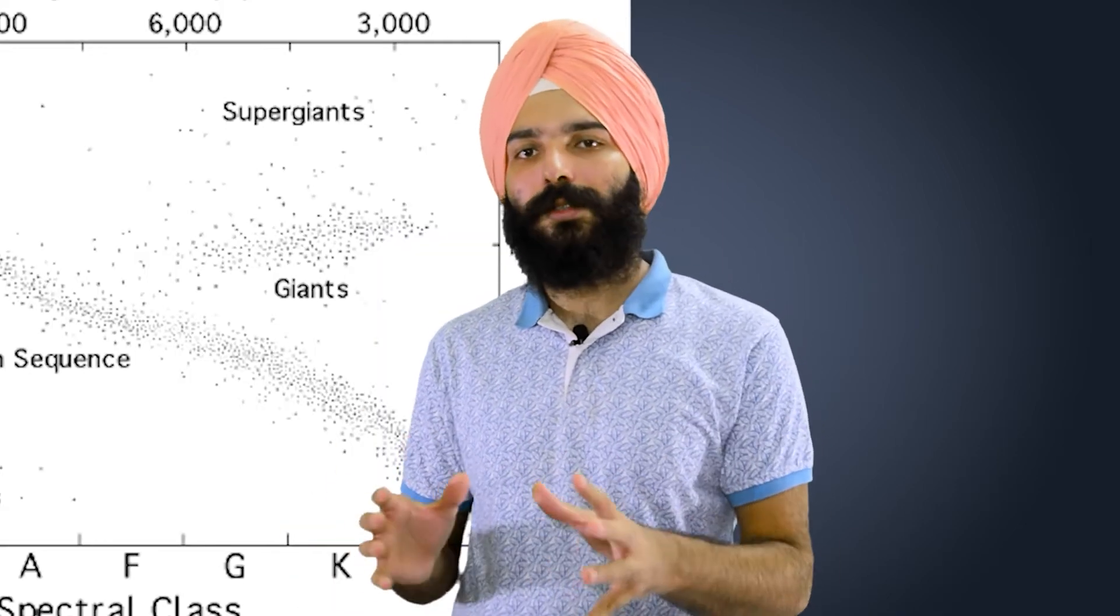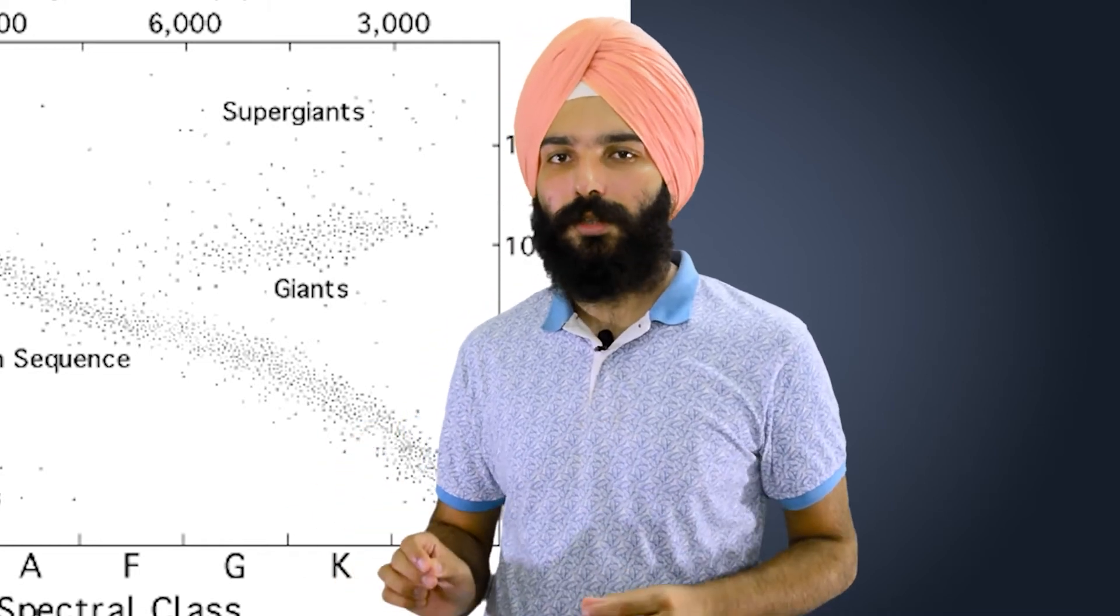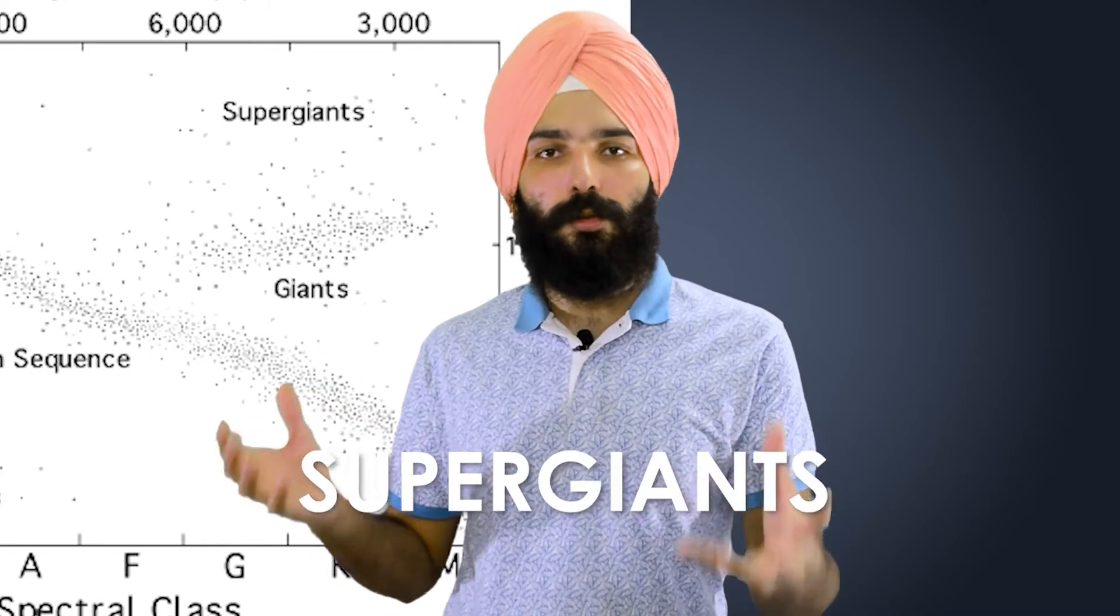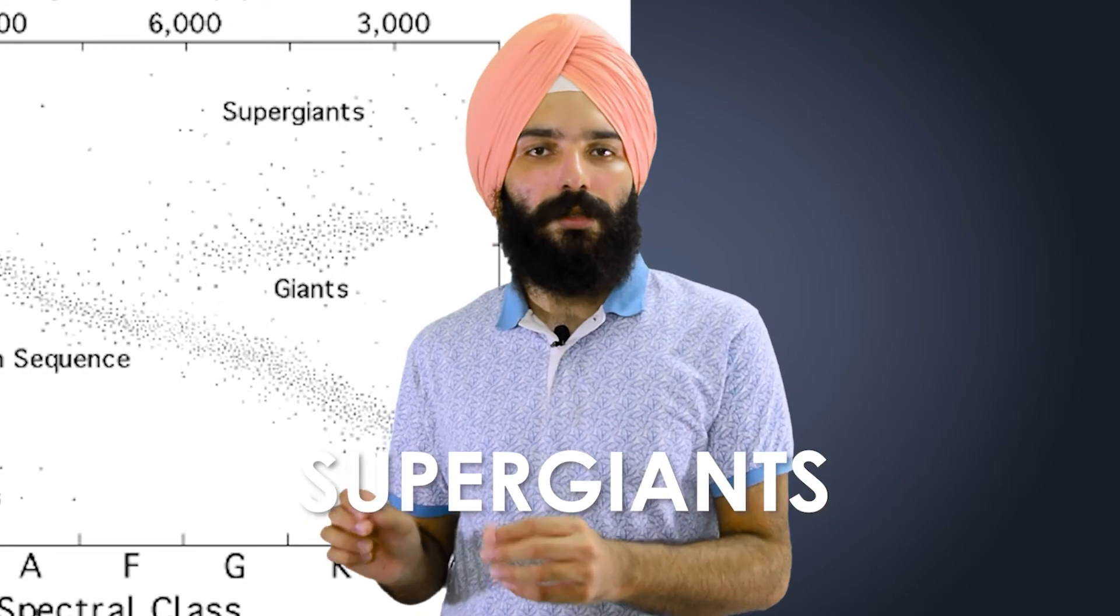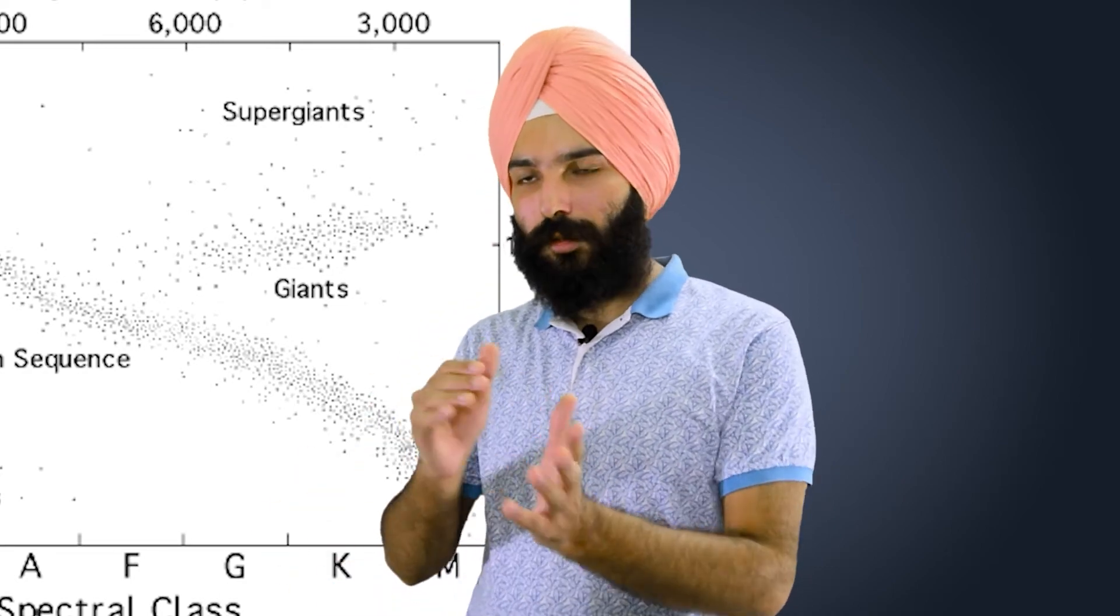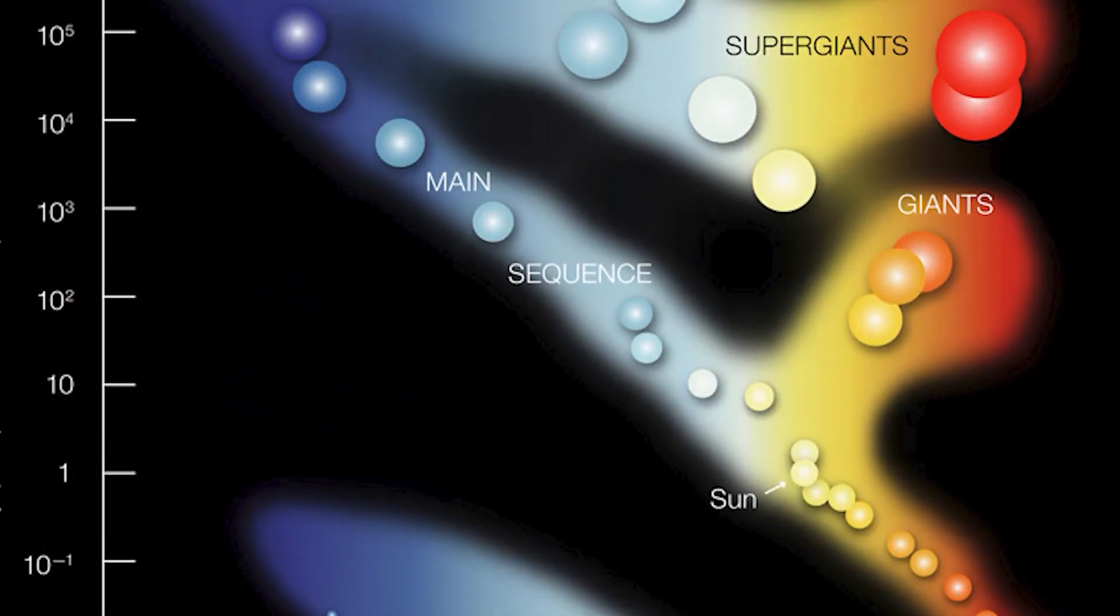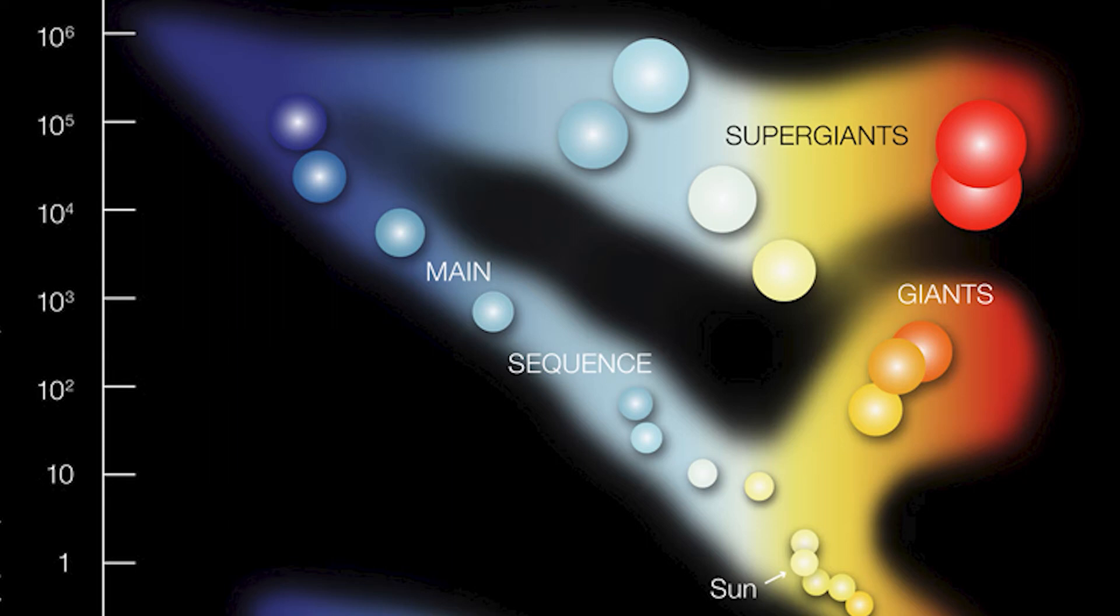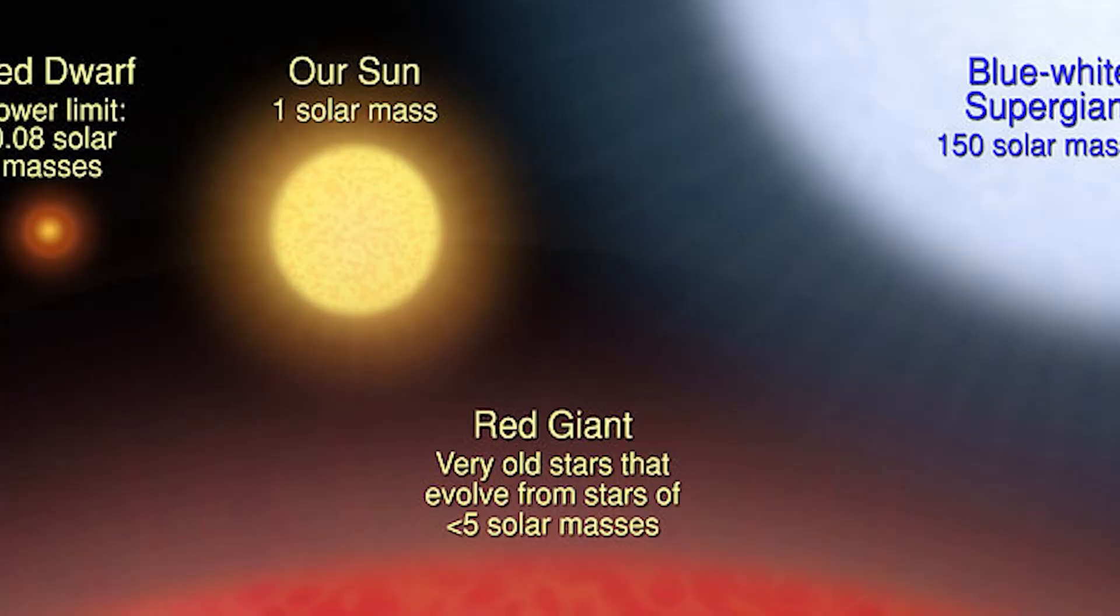Now on the opposite end of this diagram, or the opposite corner, what you'll find is the position of the red giants or the red super giants. Now at this position, you'll find that the star is actually on the much cooler end of the temperature scale and has lower temperatures, but it is extremely big and also extremely bright.